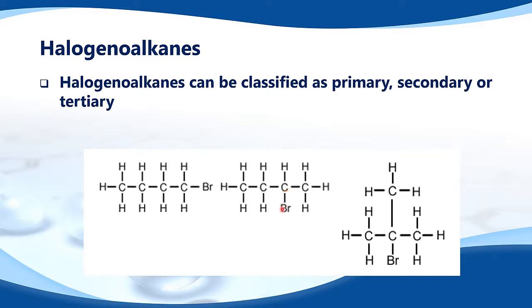In this example, we have the bromine atom again, and it's attached to this carbon. This carbon is attached to two other carbons and one other hydrogen, so that's a secondary halogenoalkane.